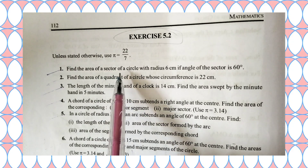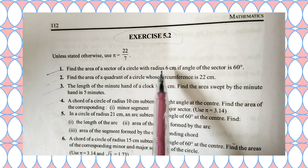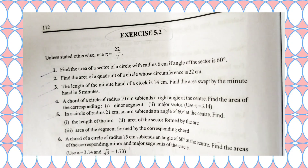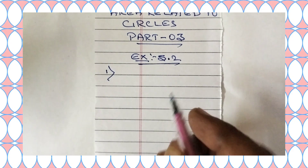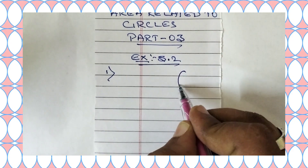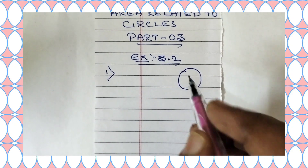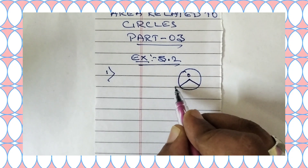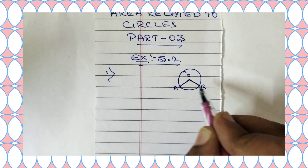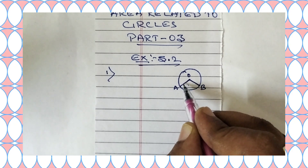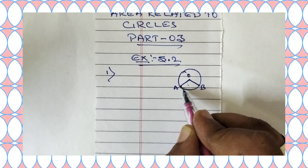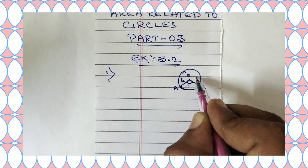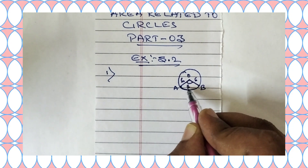Find the area of a sector of a circle with radius 6 centimeter if the angle of the sector is 60 degrees. So now let us answer the first question. This is a circle, this is the center of the circle, and this is the radius. Two radii OA and OB are drawn, and this is the sector — the region between two radii and an arc. The center angle theta is given as 60 degrees and radius is given as 6 centimeter.